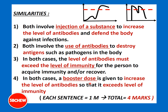In both cases, a booster dose is given to increase the level of antibodies so that it exceeds the level of immunity. You can see a drop and then a sudden increase in the level of antibodies — this is where the booster dose or second injection was given in both graphs. There are four similarity points, giving four marks. You will need at least six differences to make a total of 10 marks.